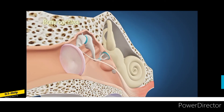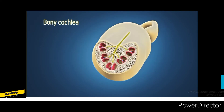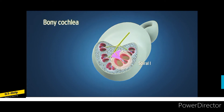The basal turn of cochlea produces the promontory on the medial wall of the middle ear. The osseous spiral lamina is a projection from the modiolus which extends partially inside the cochlear canal. The base of the spiral lamina contains the spiral canal, within which the spiral ganglion of the cochlear nerve is present. The free edge of the spiral lamina provides attachment to the vestibular ligament and basilar membrane.